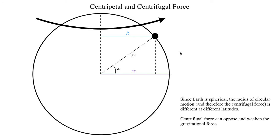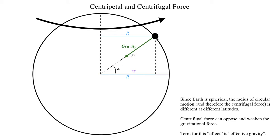One of the physical consequences that arises is that the centrifugal force can oppose and even weaken the gravitational force — and that's what we call effective gravity. It's the fact that the centrifugal force and the force of gravity oppose each other and weaken each other as a result of the centrifugal force arising from the Earth's rotation. The force of gravity points toward the center, and the centrifugal force points away from the axis of rotation, so these two vectors do in fact point in opposite directions, opposing one another.